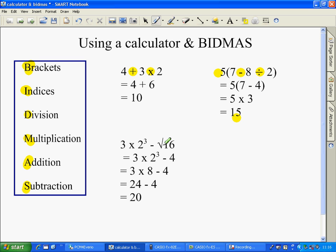This one down here, following the rules, there are no brackets. There are indices, and this square root counts as an indices because it's power to a power of a half. So let's do this first to get it out of the way.